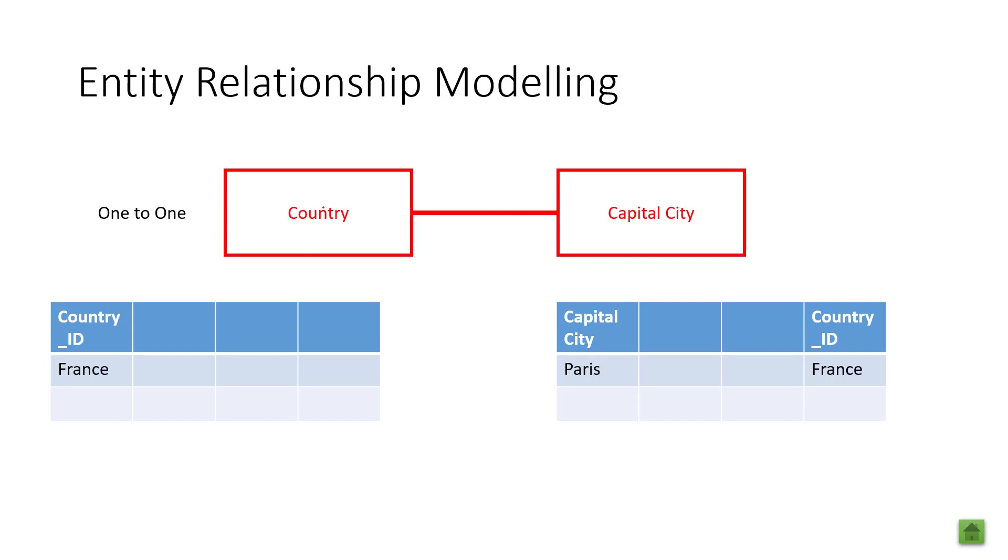These rectangles here represent tables. So this would be my country table and this would be my capital city table. You would say my country ID is France and this is my primary key. Over here I've got a capital city which in its own right is also a primary key.